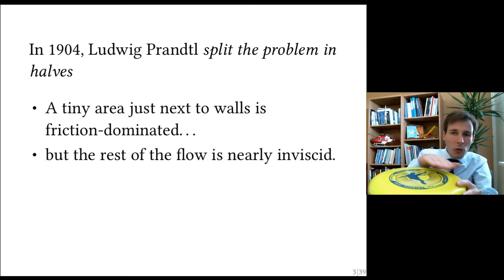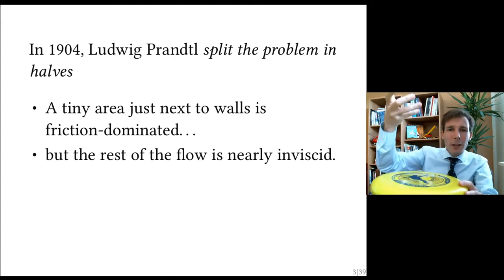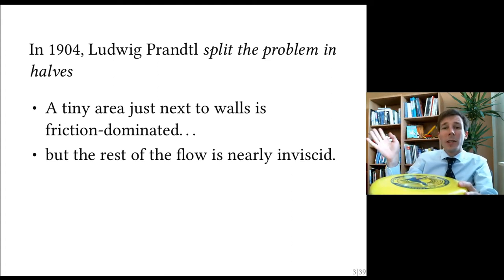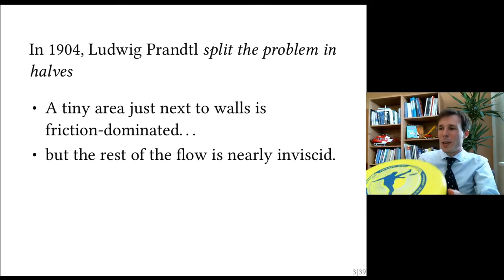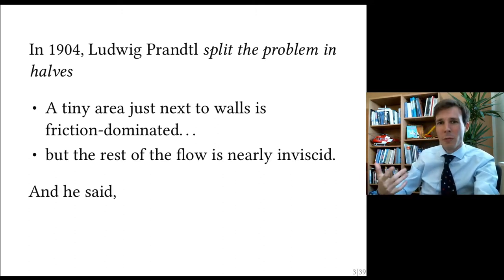Let's study very close to the Frisbee, a flow where the equations will be dominated by viscosity. And once we're done with this, we're going to study the rest of the flow in a way where we can neglect viscosity. And a lot of progress was made with this, and he came up with a name for it that was called the boundary layer, in German, Grenzschicht.